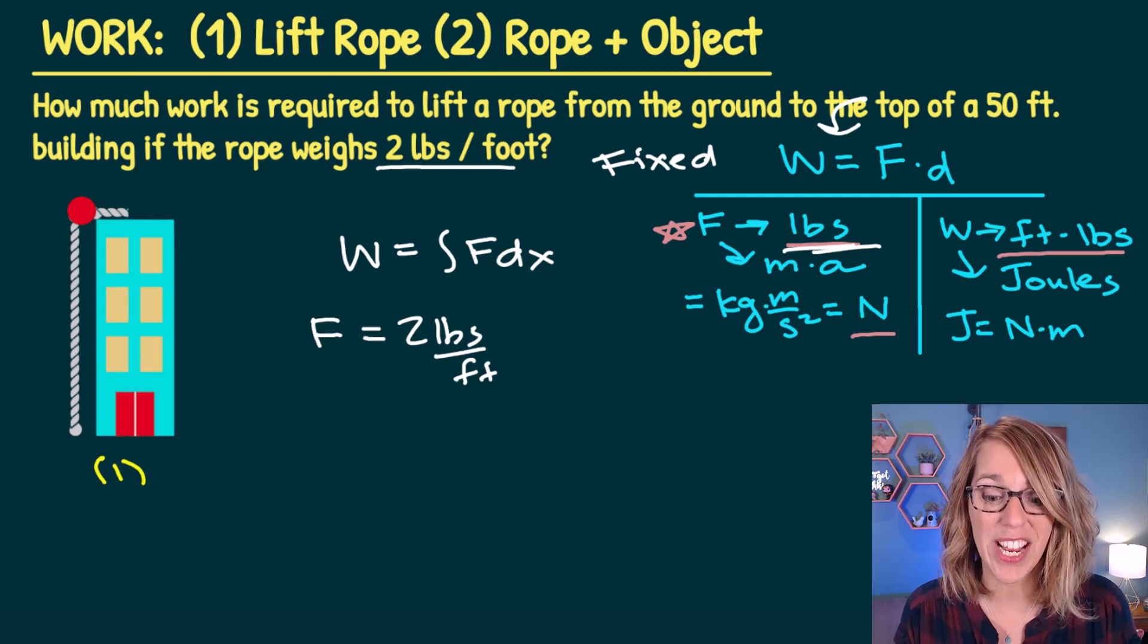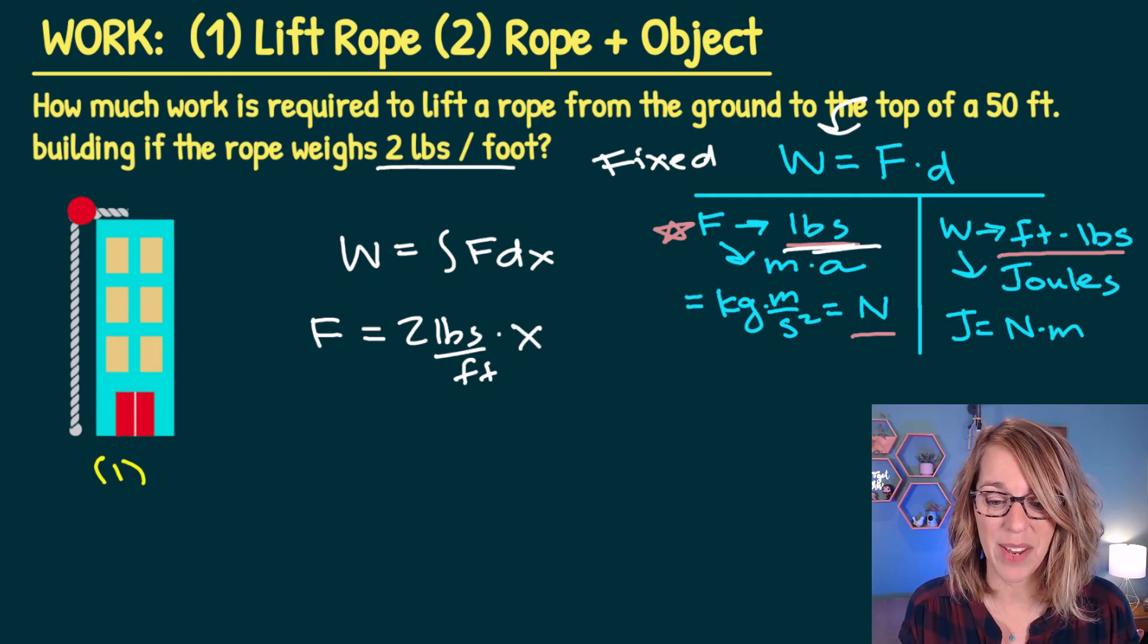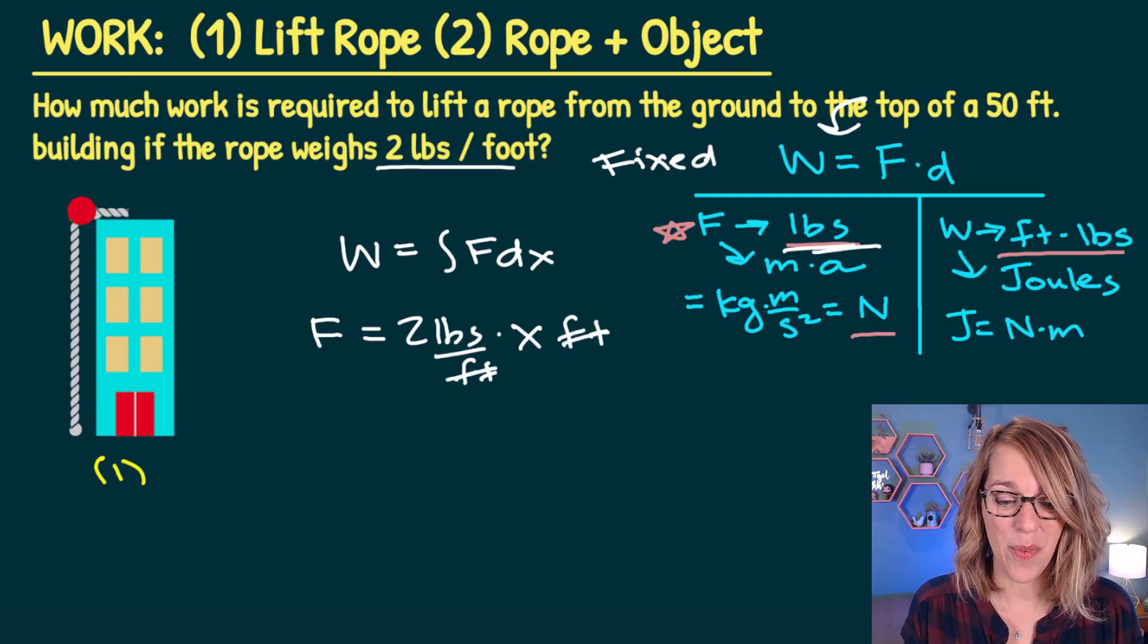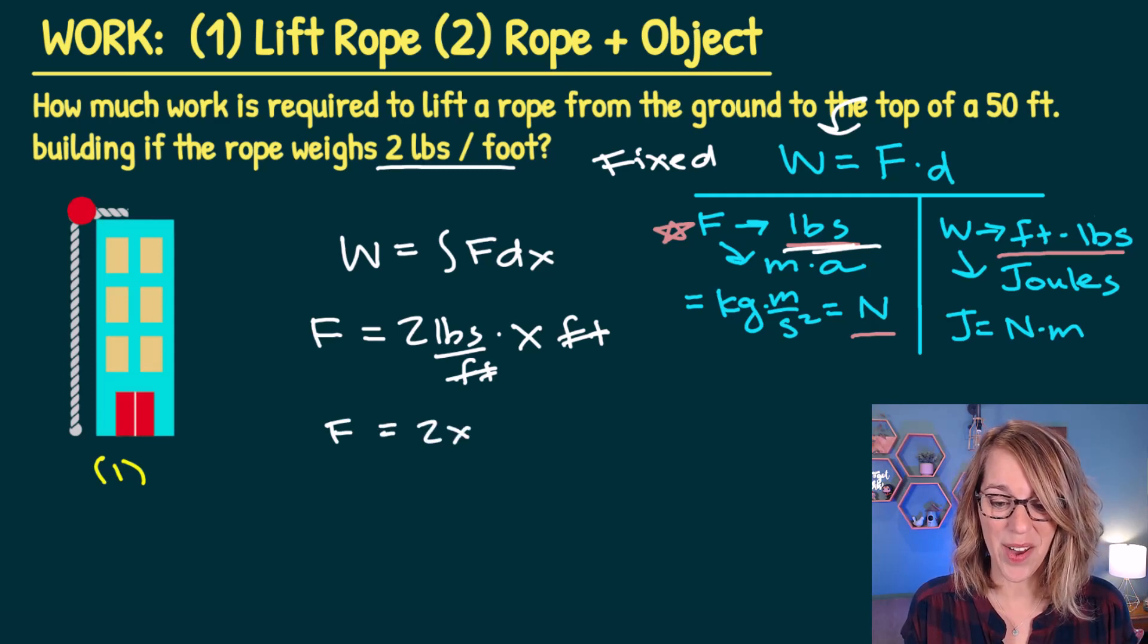As I'm pulling it up, the length of the rope changes. So the length of the rope is going to be x. So times x, that will also be in feet. So we end up with the force of 2x, and I know that's going to work out because my unit is in pounds.